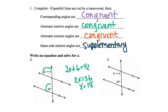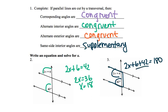For our next example, 2x plus 6 and 42 are same side interior angles, so we want to set this equal to 180 degrees. 2x plus 6 plus 42 equals 180. We combine like terms: 2x plus 48 equals 180. We subtract 48 from both sides, so 2x equals 132. We divide by 2, and x equals 66.